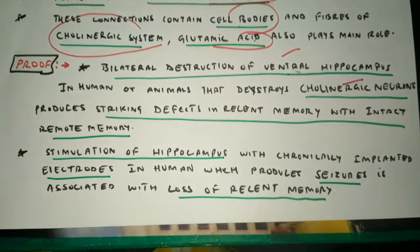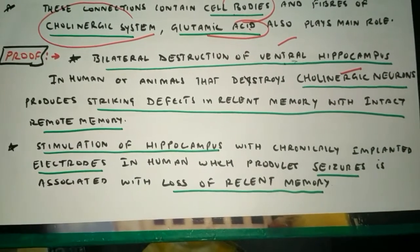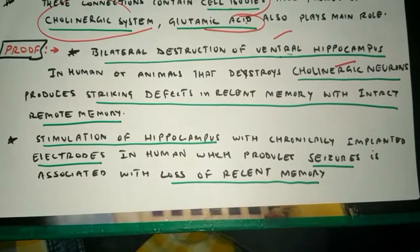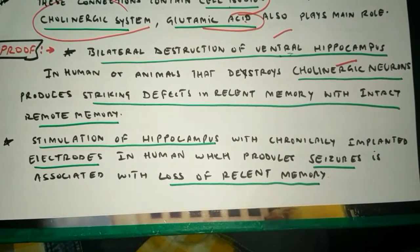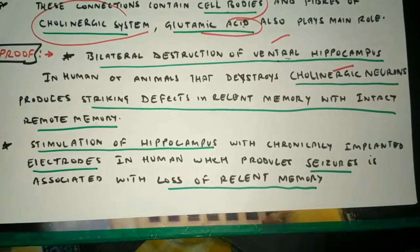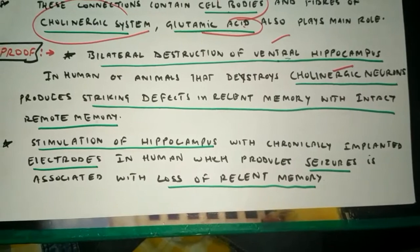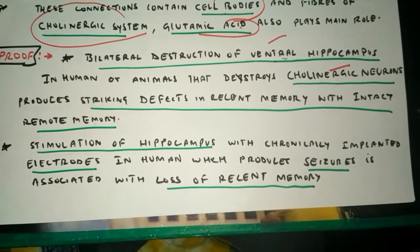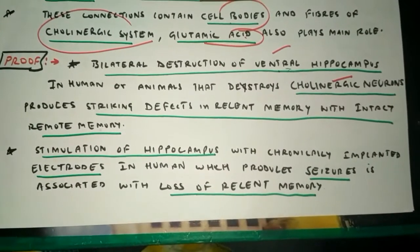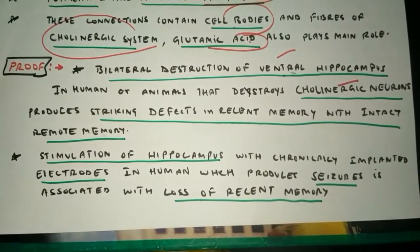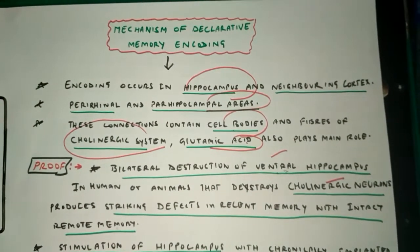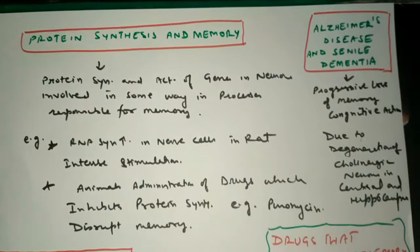Due to damage of the hippocampal area, stimulation of the hippocampus in humans produces seizures associated with loss of recent memory. Electrodes are implanted in certain types of disorders, but the dead areas cause cholinergic receptors to be damaged and memory buildup is also lost. The mechanism of declarative memory is thus tied to hippocampal integrity.